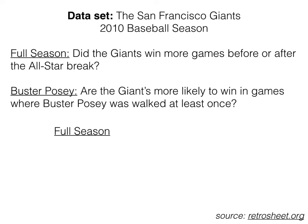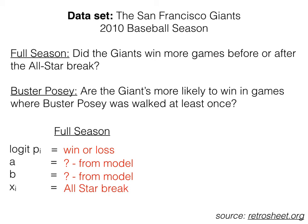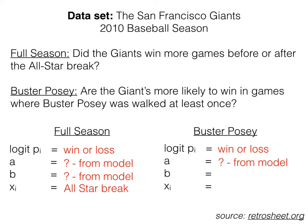Okay, let's break down our variables starting with the full season data. Our Y variable will eventually be translated into logit space, which will be win or loss. Our A, we don't know. We're going to get it from the model. Our B, we also don't know. We're going to get it from the model. And our X will be before or after the All-Star break. Moving to our Buster Posey data, we can do the same thing. Our Y variable is still wins and losses. Our A, we again don't know. Same with our B. And now our X is whether Posey was walked at least once or not.